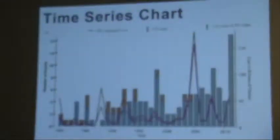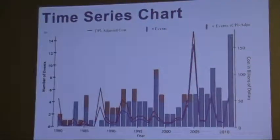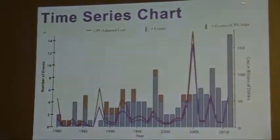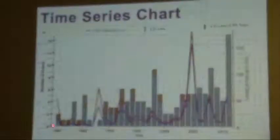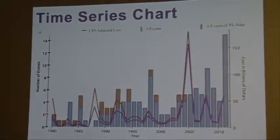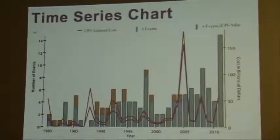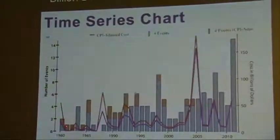Let's talk about money, because you can't talk about businesses without talking about money. What these are are billion-dollar weather and climate disasters. On the left side is the number of events — zero, two, four, six, eight, et cetera. The bars represent the number of events over time. In 1980 they had about one billion-dollar event, and around 2010 it looks like they had 14 billion-dollar events.